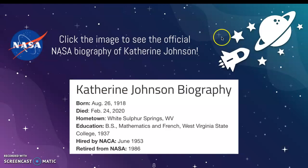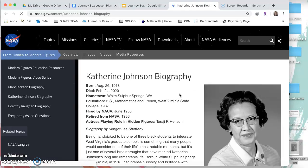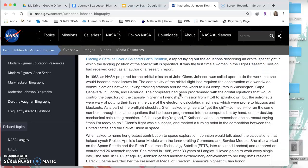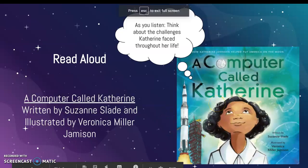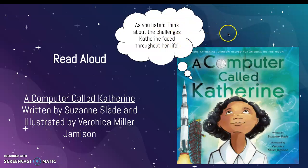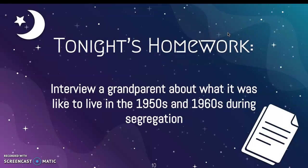Then we'll look at the biography of Katherine Johnson and NASA — I will have this printed out for students and we will read it together. After that we will do a read aloud. There's a great book by Suzanne Slade called A Computer Called Katherine, and as they listen, I want them to think about the challenges Katherine faced because it will be important for their culminating project. For homework, I'm going to give them a question to interview a grandparent about what it was like to live in the 50s and 60s during segregation.